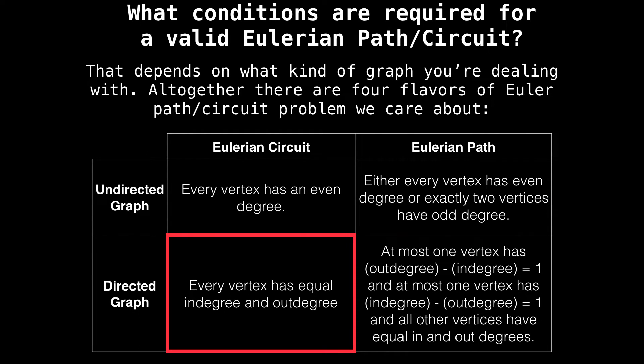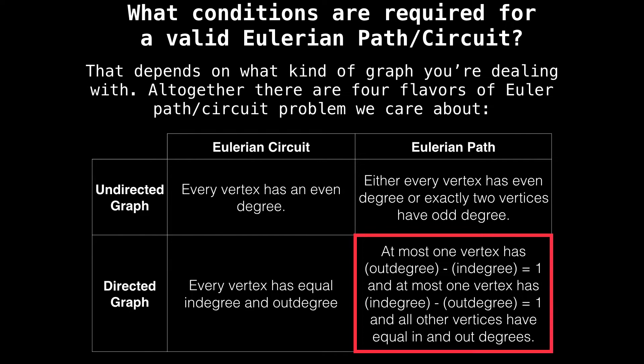In a directed graph, you can have an Eulerian circuit if every vertex has an equal in and out degree. This is the counterpart to the undirected graph version. The last variant is finding an Eulerian path on a directed graph. For there to exist an Eulerian path on a directed graph, at most one vertex has an out degree minus an in degree which is equal to one, and at most one vertex has an in degree minus an out degree equal to one, and all other vertices have equal in and out degrees.